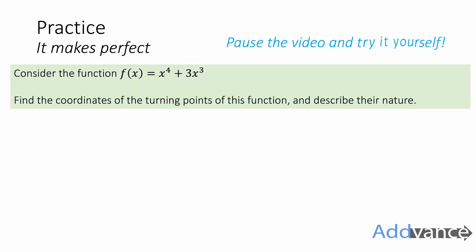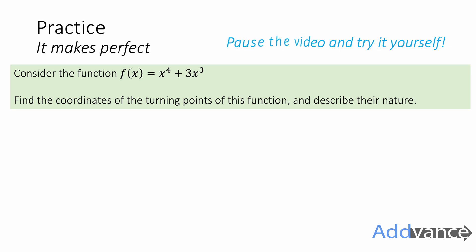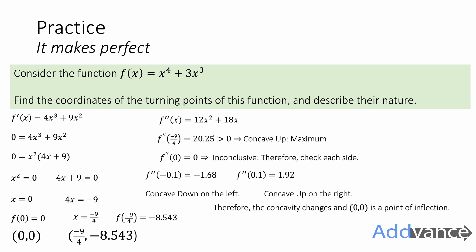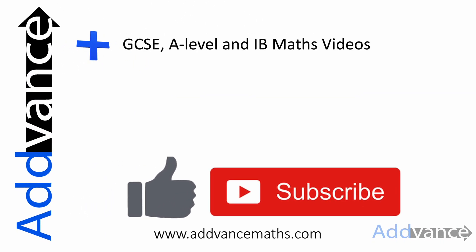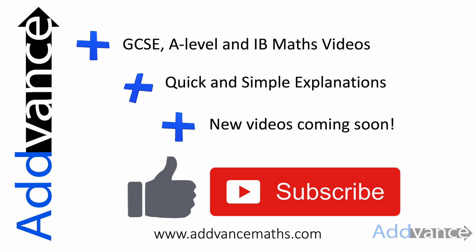Thank you for watching this video from Advanced Maths. We now have a practice question for you to try: consider x to the power 4 plus 3x to the power 3. Find the coordinates of the turning points and describe their nature using the second derivative test. Pause the video and try this yourself — I'll reveal the answers in 3, 2, 1. How did you do? Let me know in the comments below. Thanks for watching — I hope this helps in your exams. Remember to like and subscribe if you found this useful. We have more resources at advancedmaths.com to help you master your exams. Good luck!